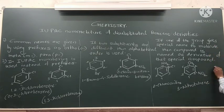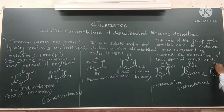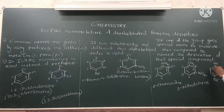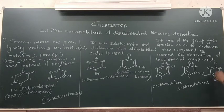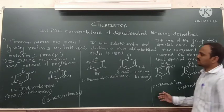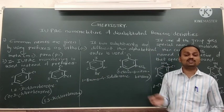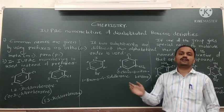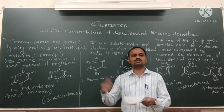One more example: the parent is phenol because OH is attached to the benzene ring, and bromine is attached on the fourth carbon. So the name of the compound is 4-bromophenol. In all these examples we have seen different conditions of di-substituted benzene derivatives and how to write their IUPAC as well as common names.